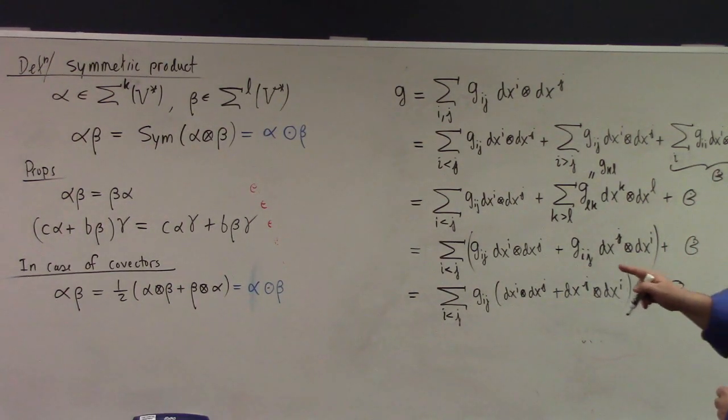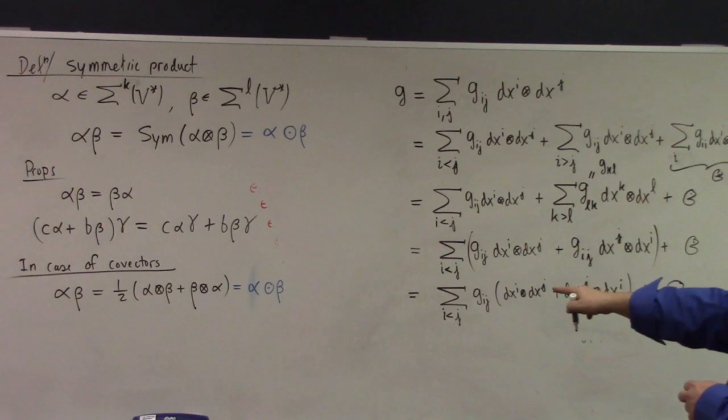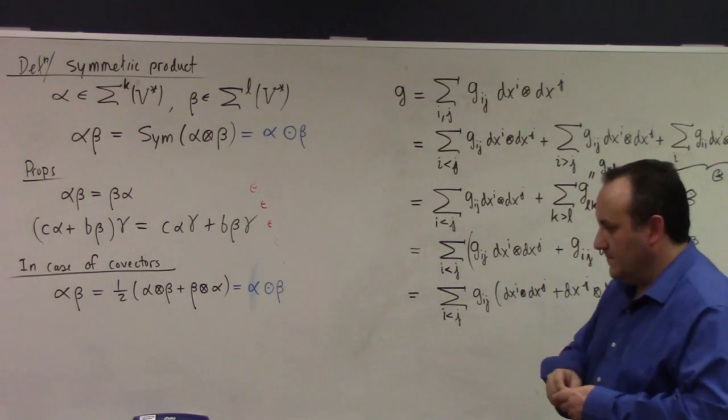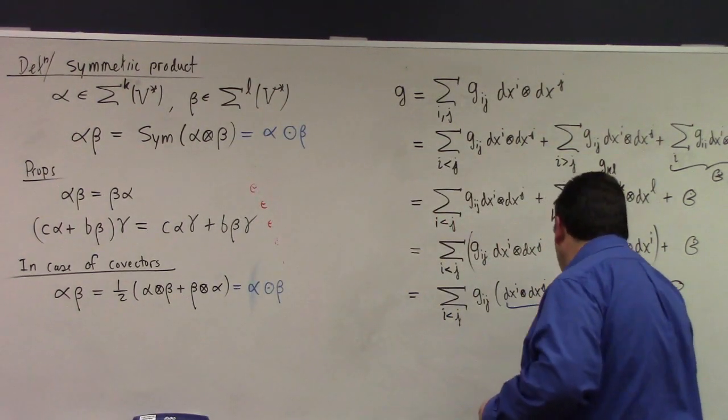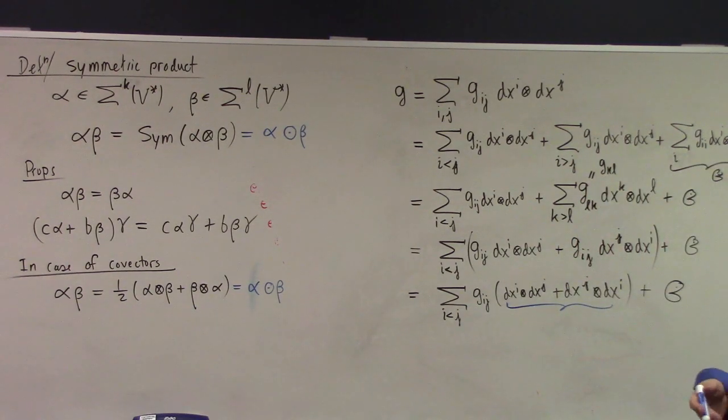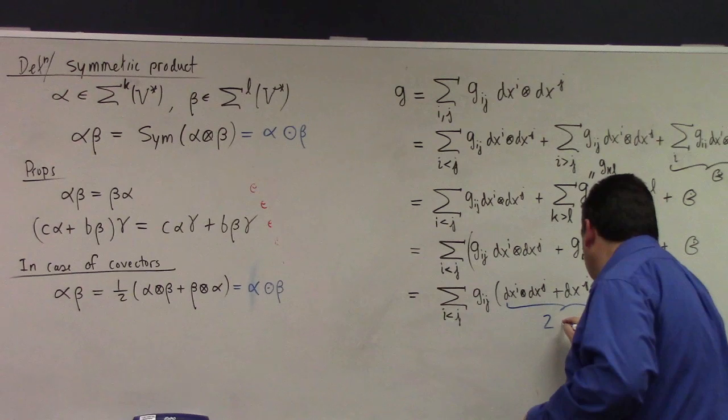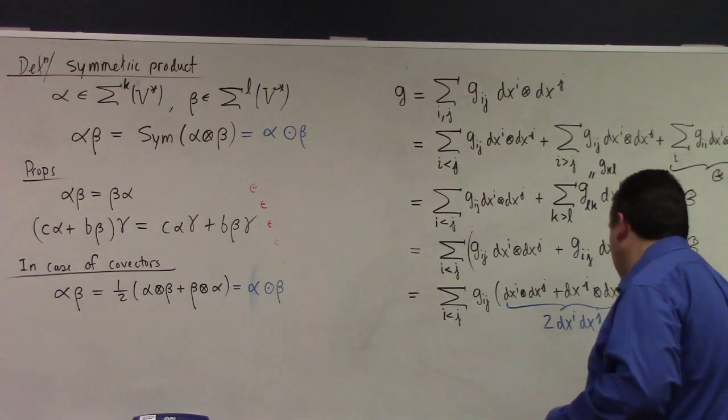But what did we have over there? One half, see that? What is this? Now, Lee may have a more clever calculation in the book. I'm just going off what I've learned a long time ago. Yeah, this is just twice dx_i, dx_j, right? Juxtaposition here. We don't do the circle dot thing.